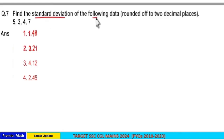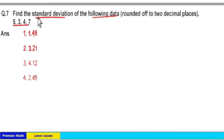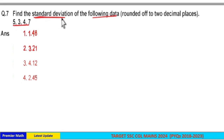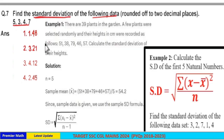Find the standard deviation of the following data: 5, 3, 4, 7. Before going to calculation, you should understand there are two formulas for standard deviation.